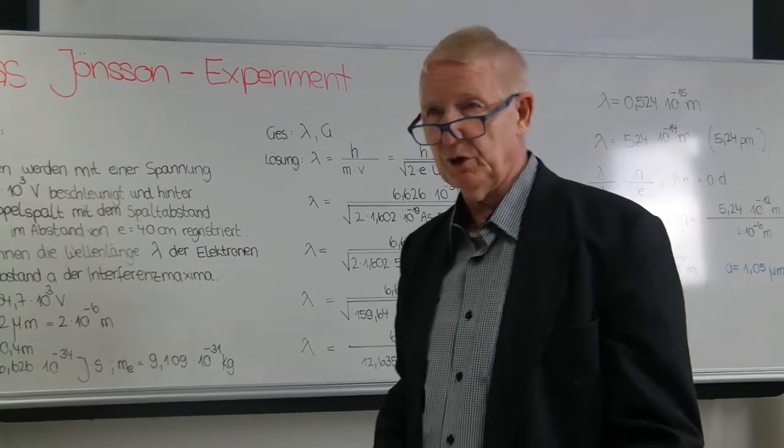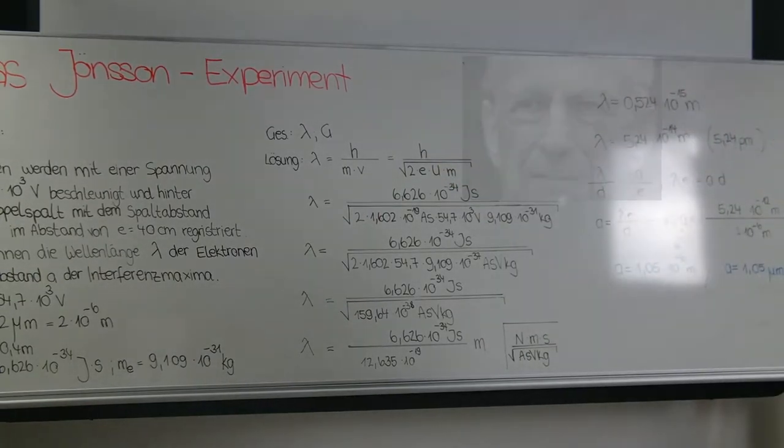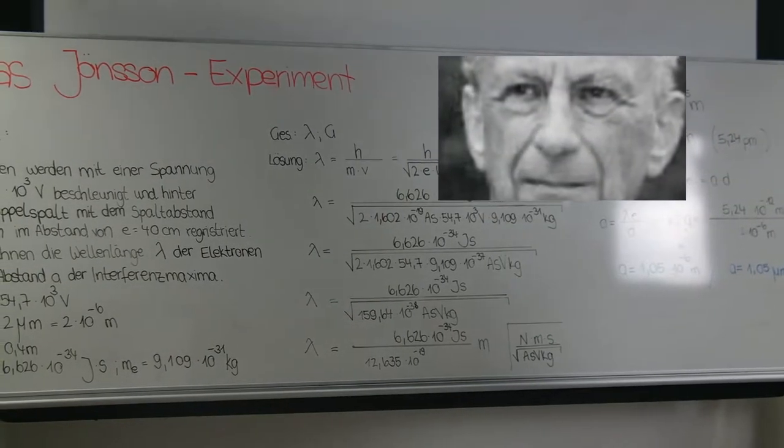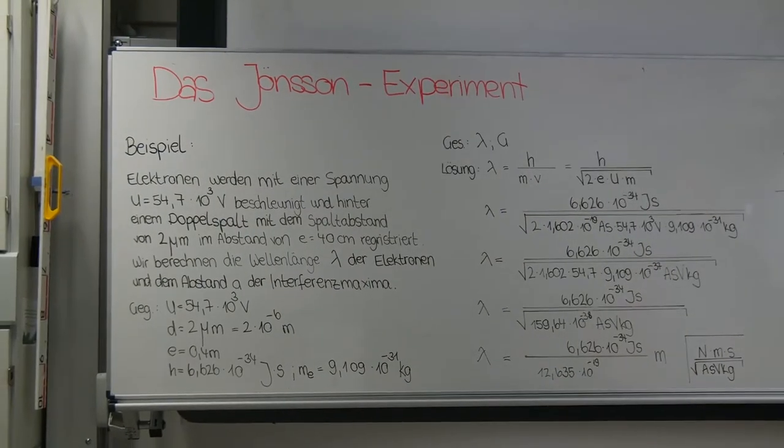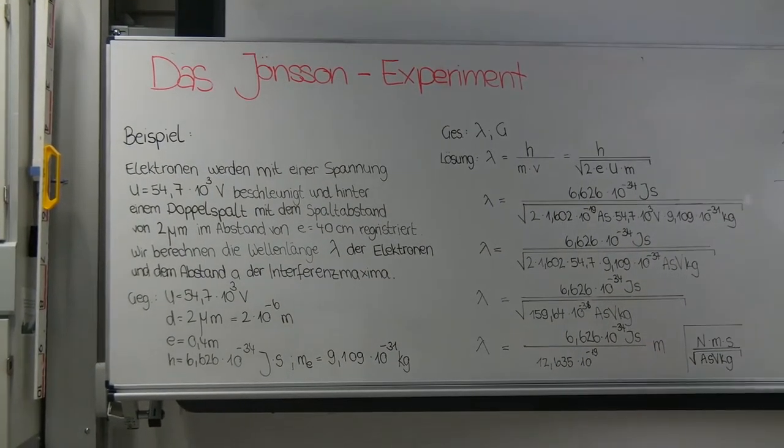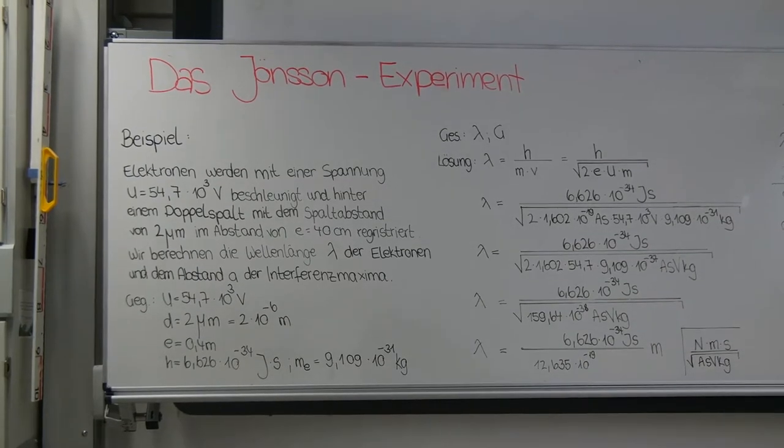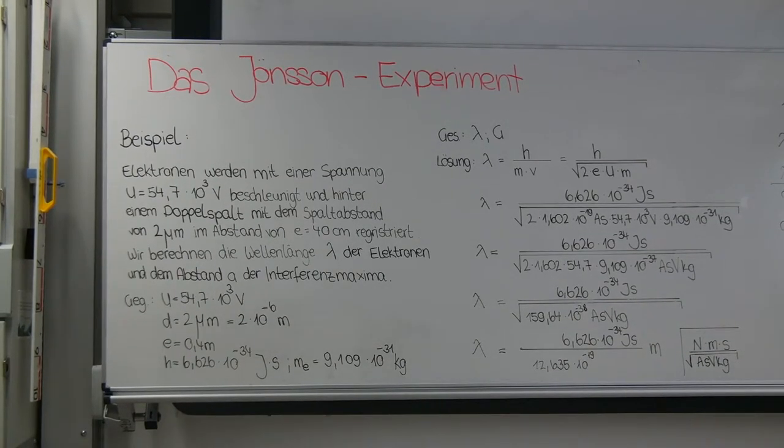It continues with an example. Julia reads it to us. Electrons are accelerated with a voltage U = 54.7 × 10³ volts and registered behind a double-slit with a slit spacing of 2 micrometers at a distance of E = 40 centimeters. We calculate the wavelength lambda of the electrons and the spacing A of the interference maxima.